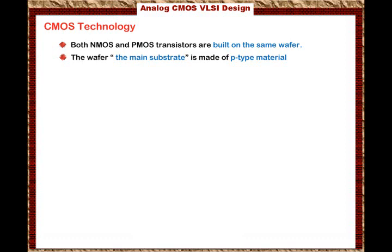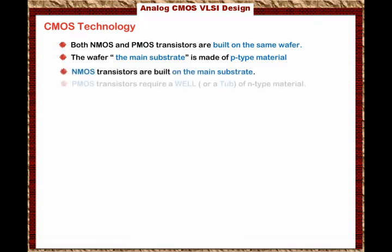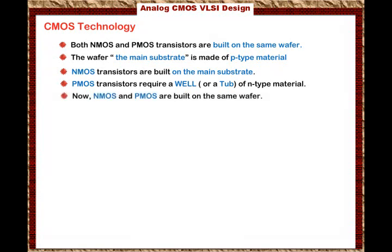NMOS transistors are built on the main substrate, and the PMOS transistors require a well of N-type material. So we come to the main substrate and create an N-well. Now we are ready to build NMOS and PMOS transistors on the same wafer.